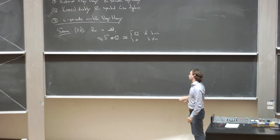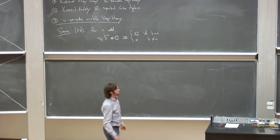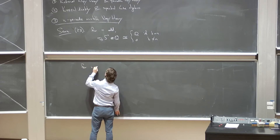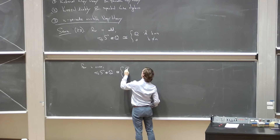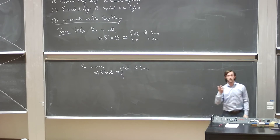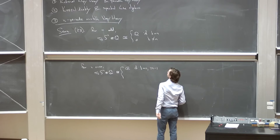So rationally an odd sphere is just an Eilenberg–MacLane space. For even spheres the answer is not so far off: the rational homotopy groups of an even sphere are given by Q in dimension n — what you'd expect — and then there's one other Q sitting in dimension 2n minus 1, and zero otherwise.